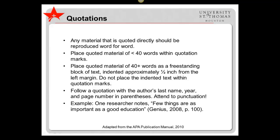Quoting and paraphrasing are often the source of much confusion among beginning researchers. Here are some rules of thumb. Any material that is quoted directly should be reproduced word for word. Place quoted material of fewer than 40 words within quotation marks. Place quoted material of 40 or more words as a freestanding block of text indented approximately one half inch from the left margin. Do not place the indented text within quotation marks.